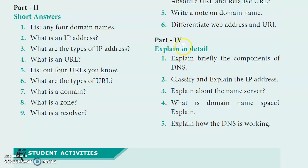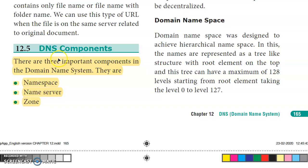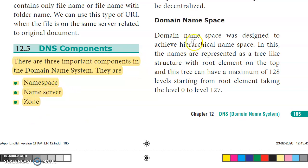Part 4, first question: Explain briefly the components of DNS. There are three components: namespace, name server, and zone. Let us discuss each component in detail.